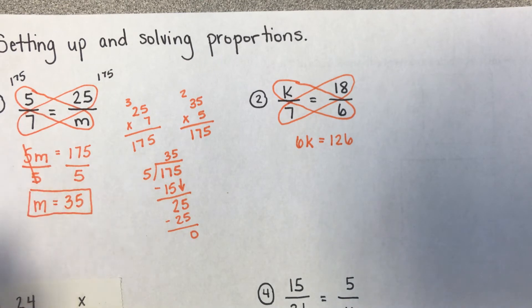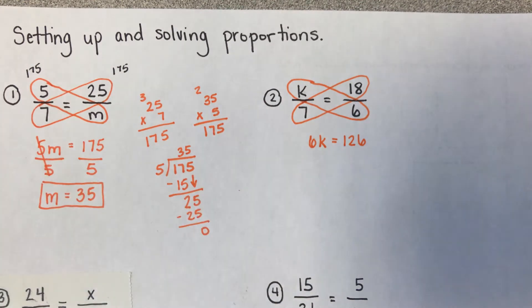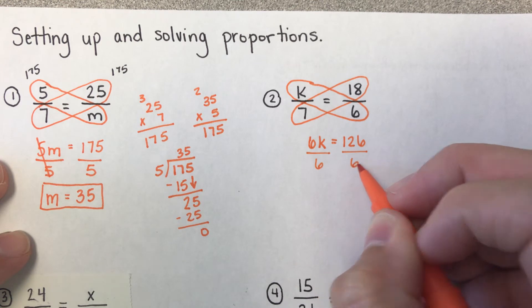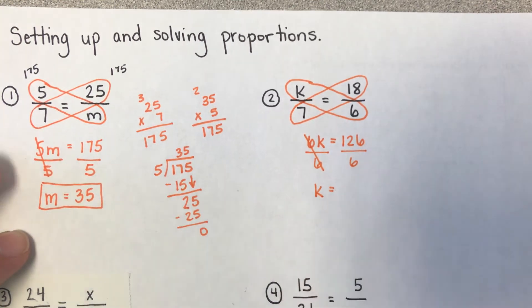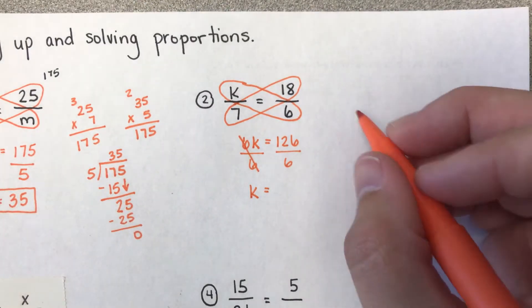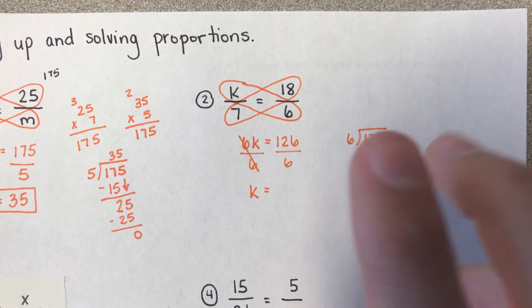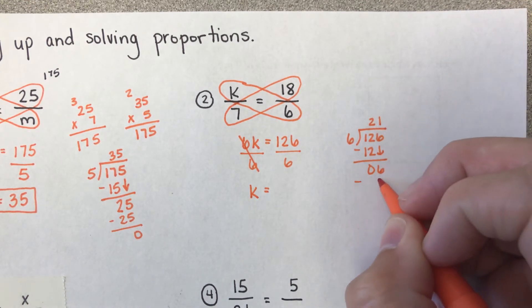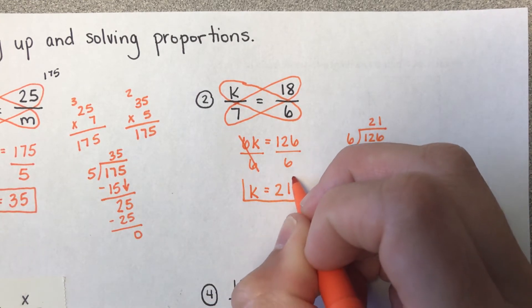So now I'm at the point where I need to do the inverse because something times 6 is going to give me 126. And since I don't know what that something is, I have to divide. So I'm going to divide by 6. Those will cancel out, so I'm just left with k over here. So now I need to do 126 divided by 6. 6 goes into 12 two times. That's a 0. Bring down my 6. 6 goes into 6 one time. So now I know k is equal to 21.